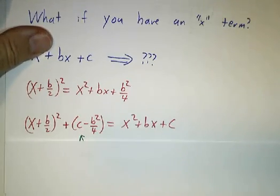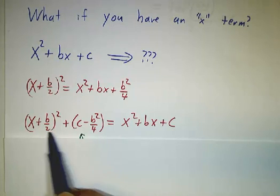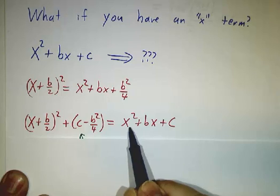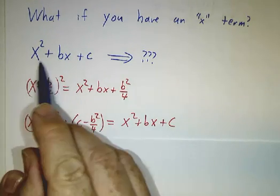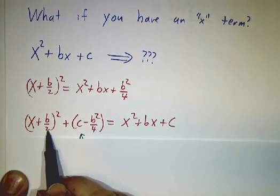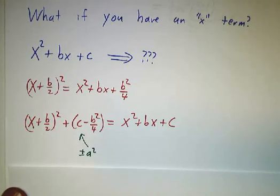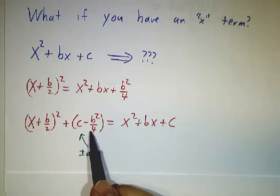So whatever you have, if you take x plus b over 2 squared, plus c minus b squared over 4, that gives you x squared plus bx plus c. So whenever you have an expression involving an x in it, you can always write it as x plus something squared plus something else. And that something else is either going to be a squared or minus a squared, depending on whether it's positive or negative.